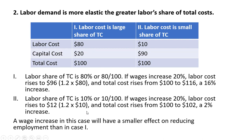In scenario two, labor's share of total cost is only 10% — labor cost divided by total cost. If wages increase 20%, labor costs rise from $10 to $12, a 20% increase. Total cost then rises from $100 to $102 — the $12 plus $90 — only a 2% increase. So a wage increase in this case will have a smaller effect on reducing employment than in case one.